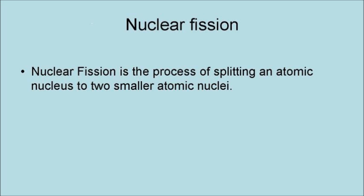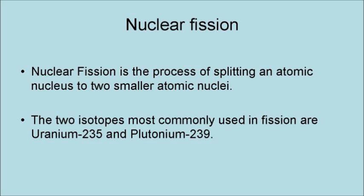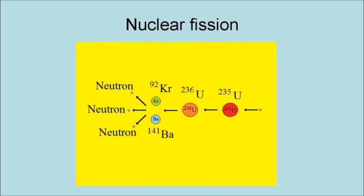Nuclear fission is the process of splitting an atomic nucleus into two smaller atomic nuclei. The two isotopes most commonly used in fission are uranium-235 and plutonium-239. Uranium fission starts with a neutron colliding with a uranium-235 atom, turning it into an energetic uranium-236 atom. This uranium-236 atom is so energetic that it quickly splits into a krypton atom and a barium atom, along with three neutrons, which can go on to cause other fission events. This animation is an illustration of nuclear fission reactions.